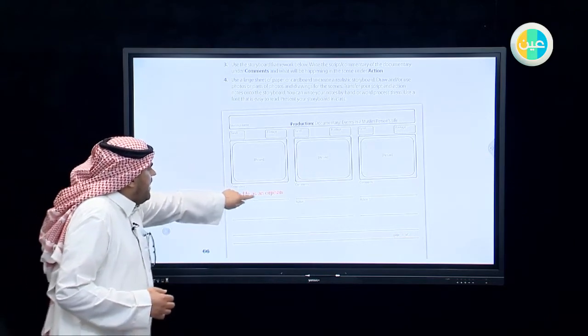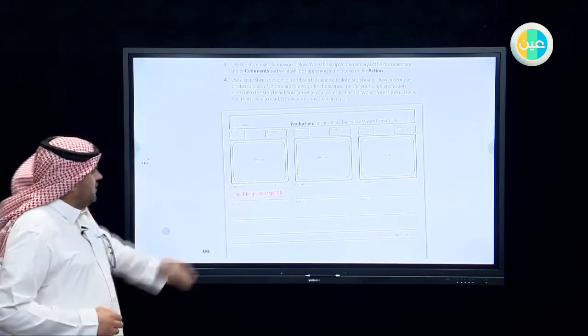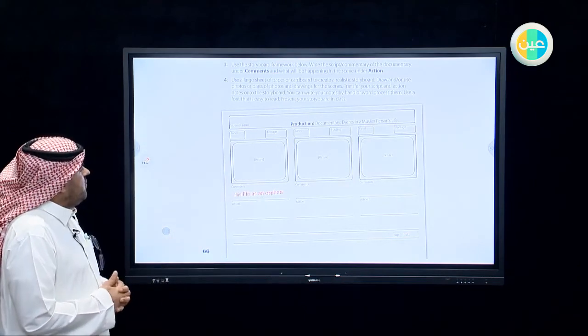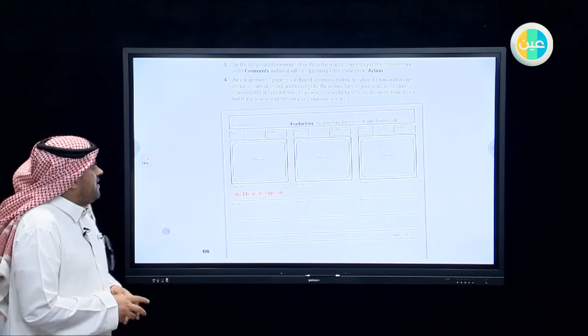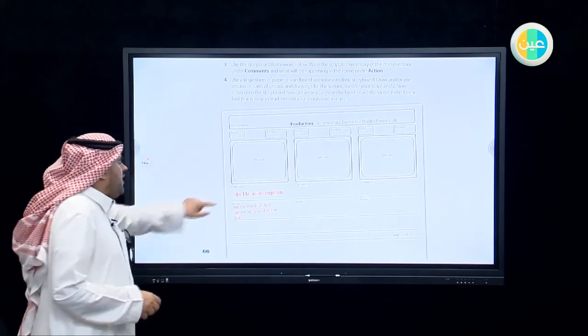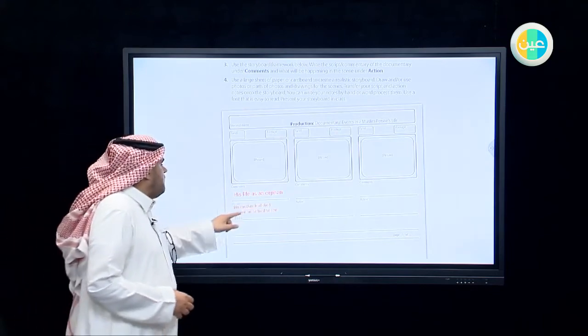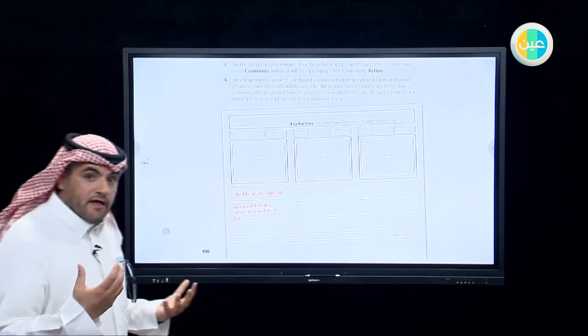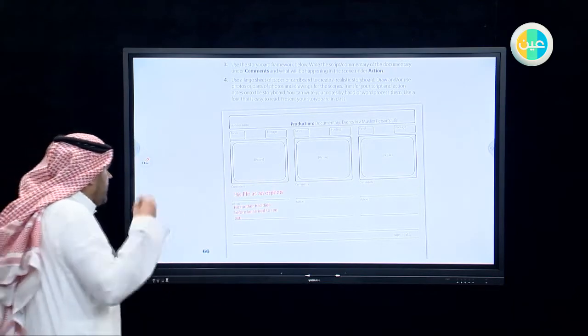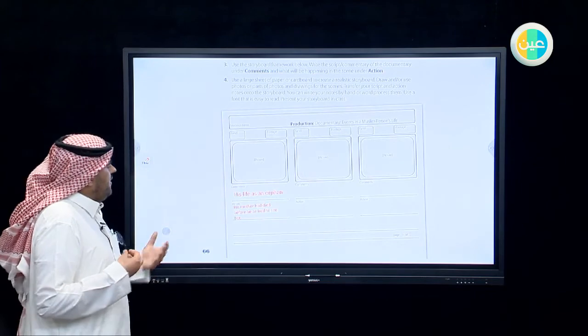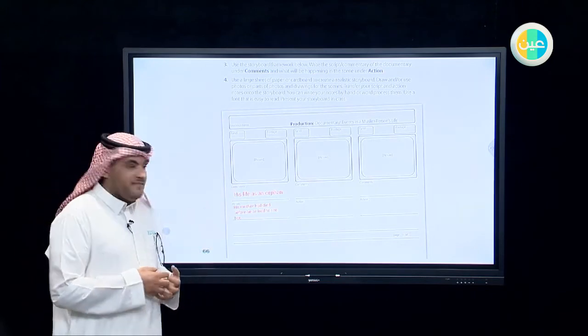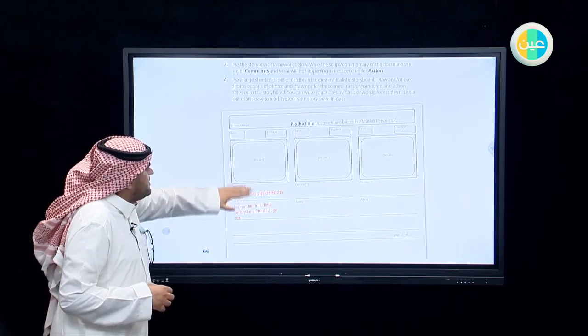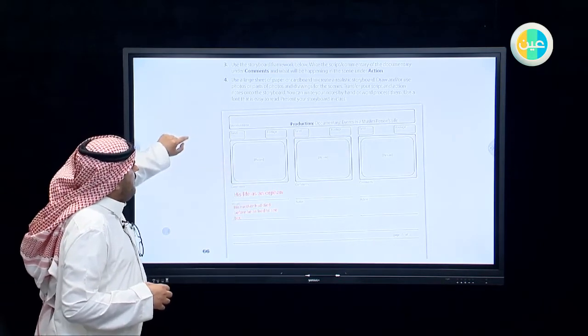Now let's start with the first comment. The first comment: His life as an orphan. So this is the very important scene when he was an orphan in the beginning of his life. Number two, the action: His mother had died before he arrived to see her. He was in the desert outside Mecca al-Mukarramah, then he came back. When he came back to Mecca, his mother had died. So this is very important action and we can provide these scenes by a photo.